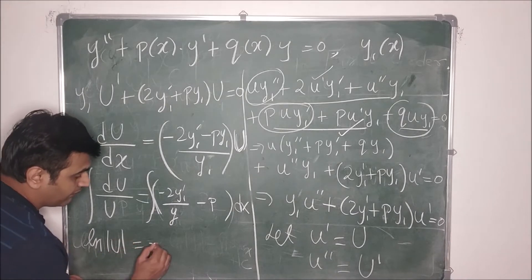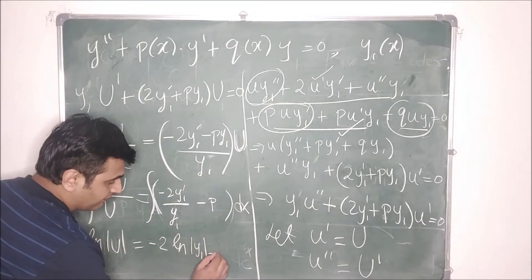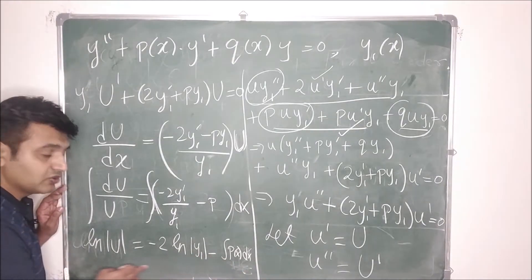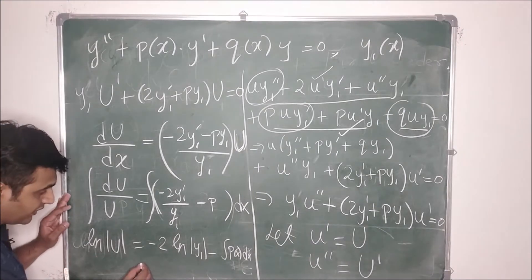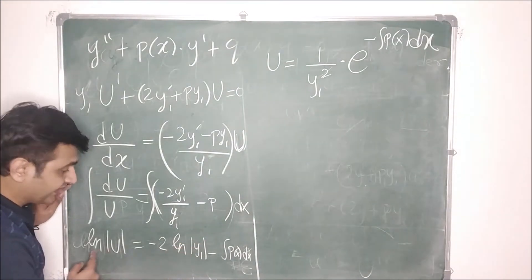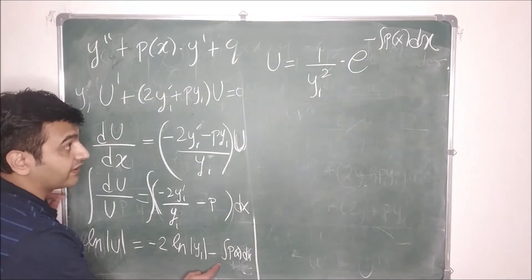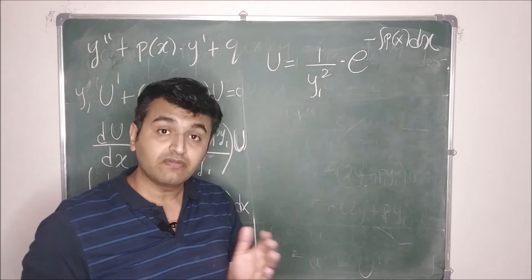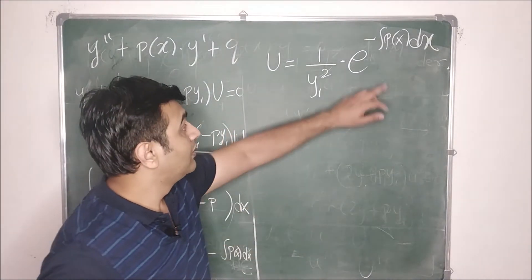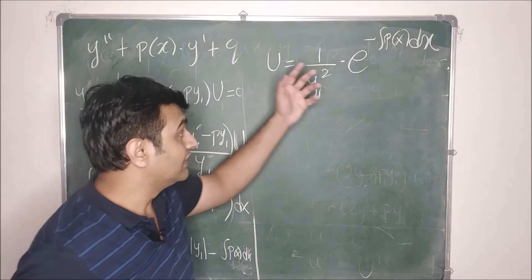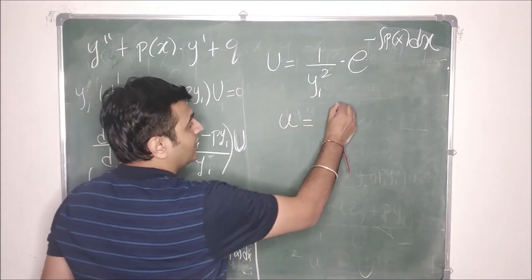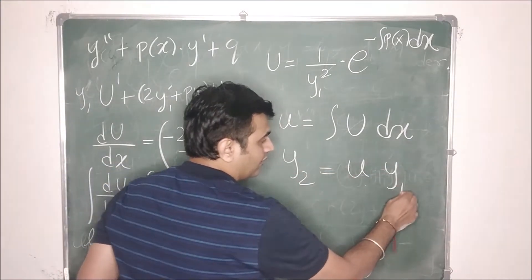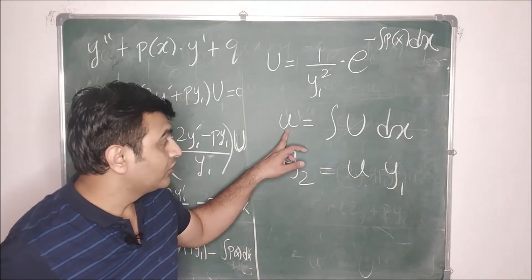Integrating both sides: ln U = −2·ln y1 − ∫p(x)dx + C. Exponentiating, we get U = (1/y1²)·e^(−∫p(x)dx). Here p(x) is the coefficient of y' when the coefficient of y'' is 1. Once we know U (capital u), we find small u by integrating: u = ∫U dx. Then y2 = u·y1.